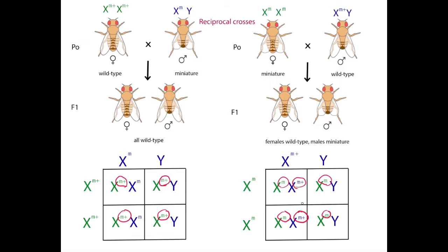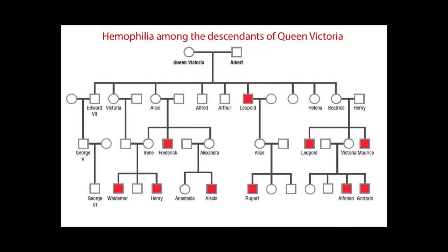Pedigrees can also reveal X linkage. Let's look at the family tree of Queen Victoria, who was the Queen of England from 1837 to 1901. Many of her descendants had hemophilia, a disease in which the blood does not clot effectively. The individuals affected by hemophilia are indicated by the filled shapes.